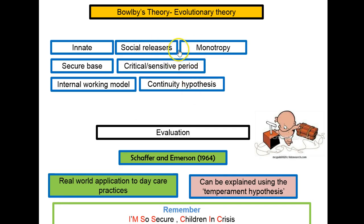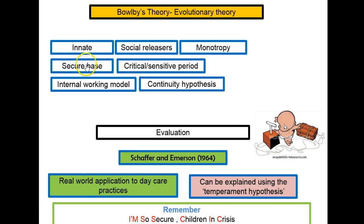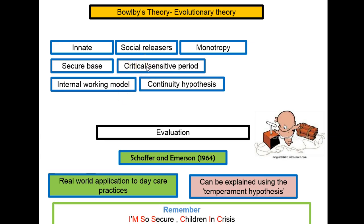Once babies start producing these social releases, we have monotropy. A monotropy figure is the primary caregiver — the person babies are most discriminant towards. Some babies are so clingy to their mother or sometimes their father, wanting to follow them everywhere — that's how we know that person is their monotropy figure. Then we have the secure base: human babies love to explore, but they are a danger to themselves. If they explore and hurt themselves, they know they can go back to their monotropy figure. This bond with the monotropy figure has to happen within the first two years — otherwise, Bowlby said, it's basically too late.